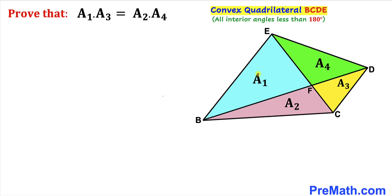The area of this green triangle is A sub 4. Now we are going to prove that the product of these two opposite triangles A sub 1 times A sub 3 is equal to the product of the other two opposite triangles A sub 2 times A sub 4.